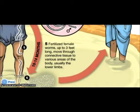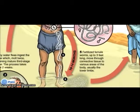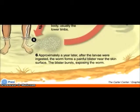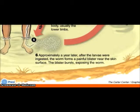The fertilized female worms migrate to various areas of the body, usually the lower limbs such as legs and feet. Here you can see the female guinea worm move down towards the person's left foot. Approximately a year after the larvae were ingested, the worm forms a painful blister near the skin surface, which bursts, exposing the worm.